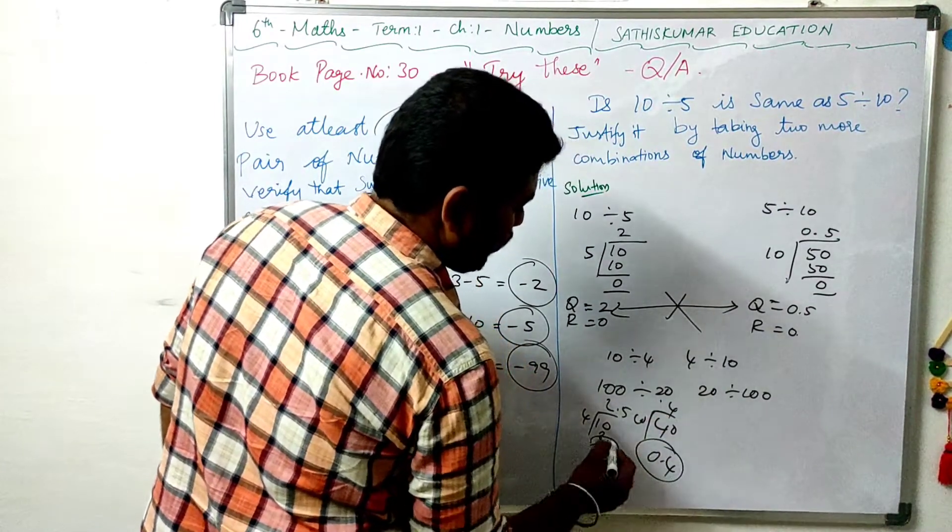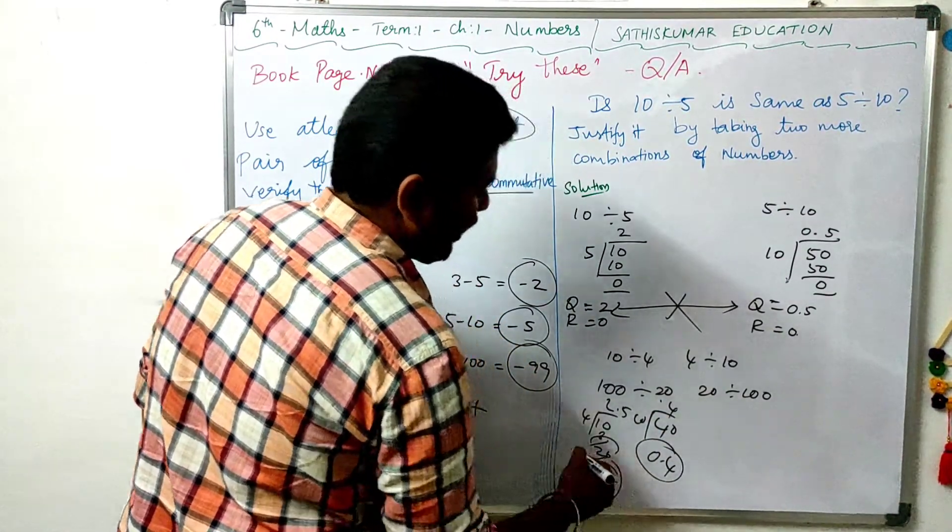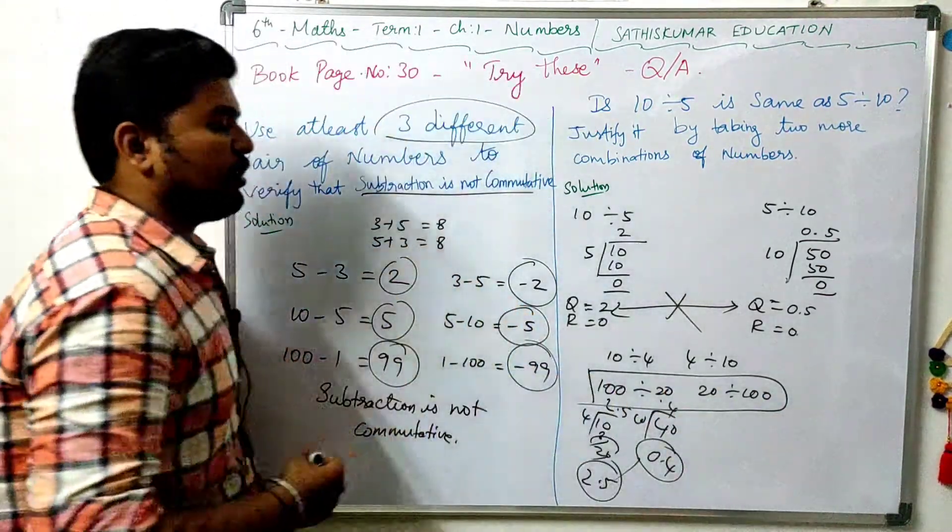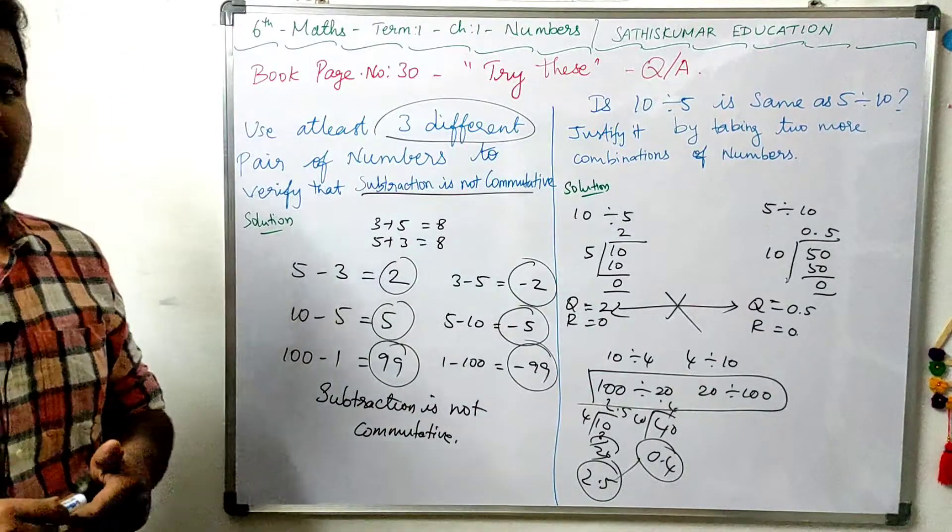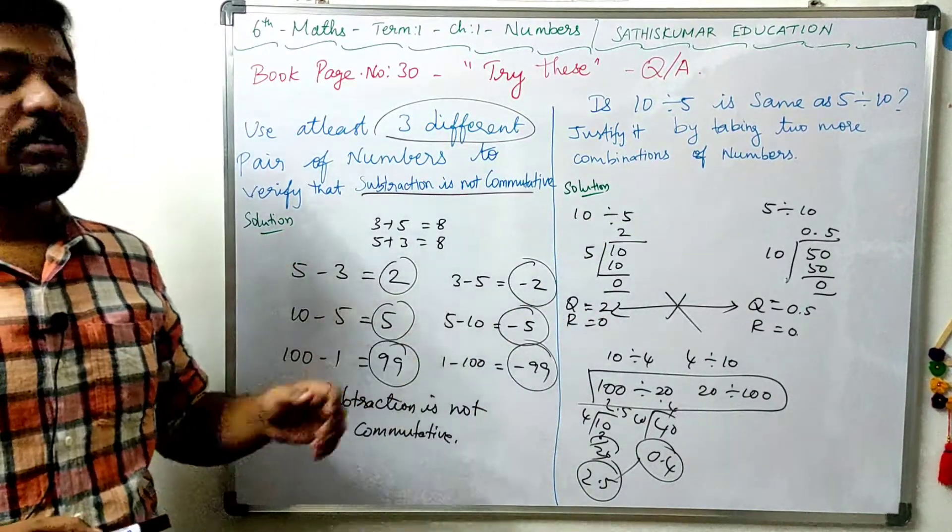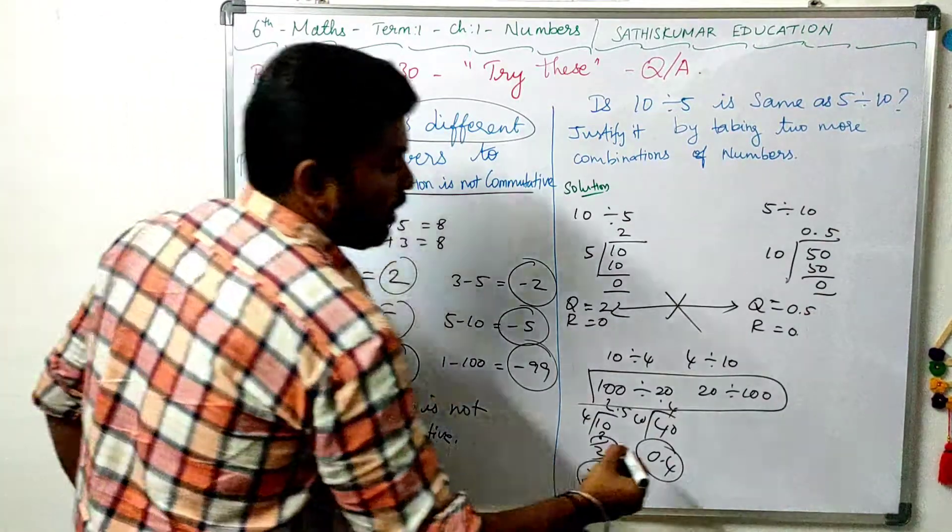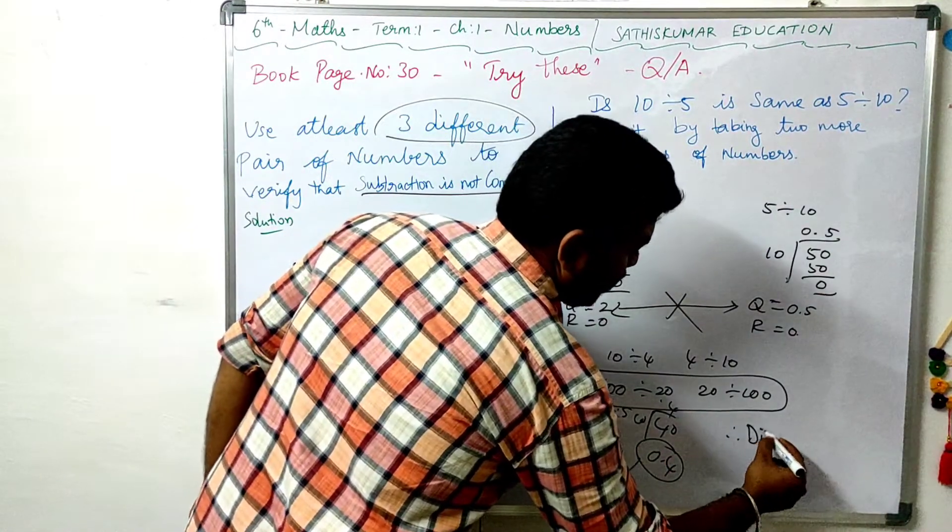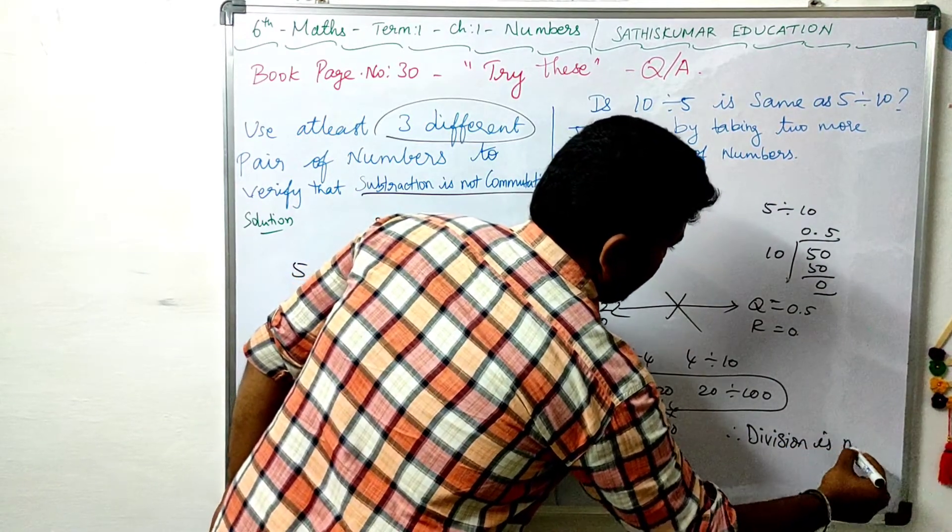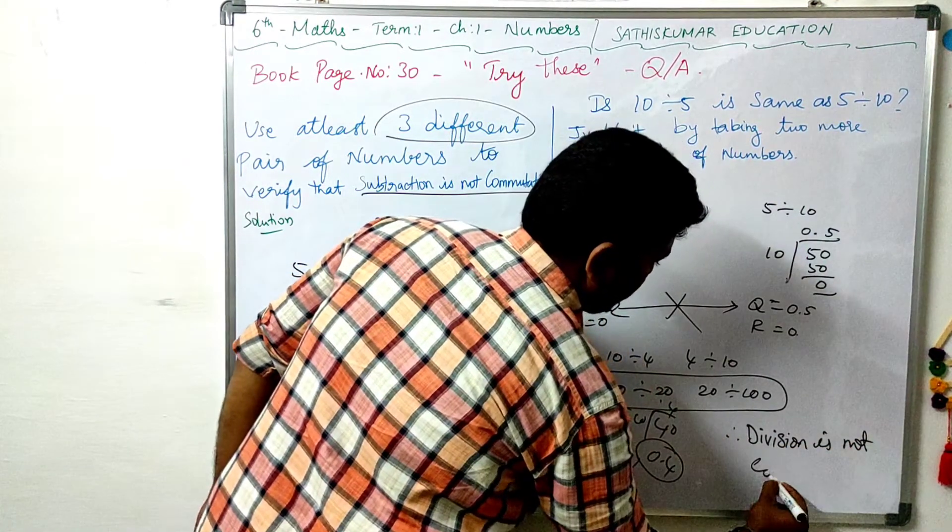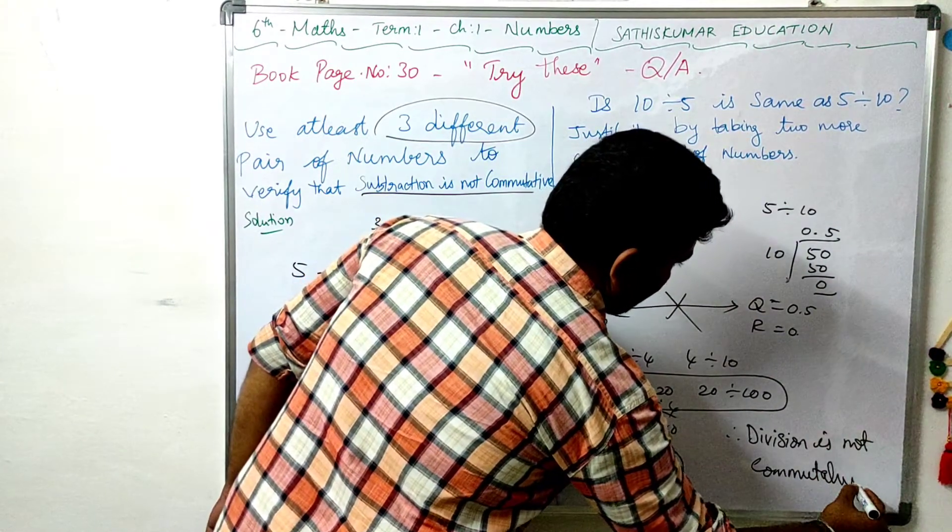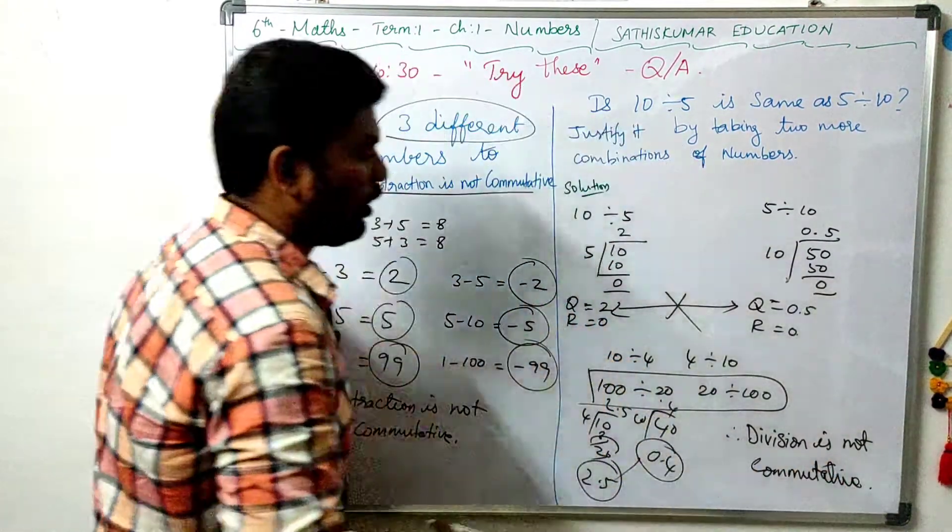If you add 100 divided by 20 and 20 divided by 100, if you solve, you get 2 solutions. So division is not commutative. Last time, division is not commutative.